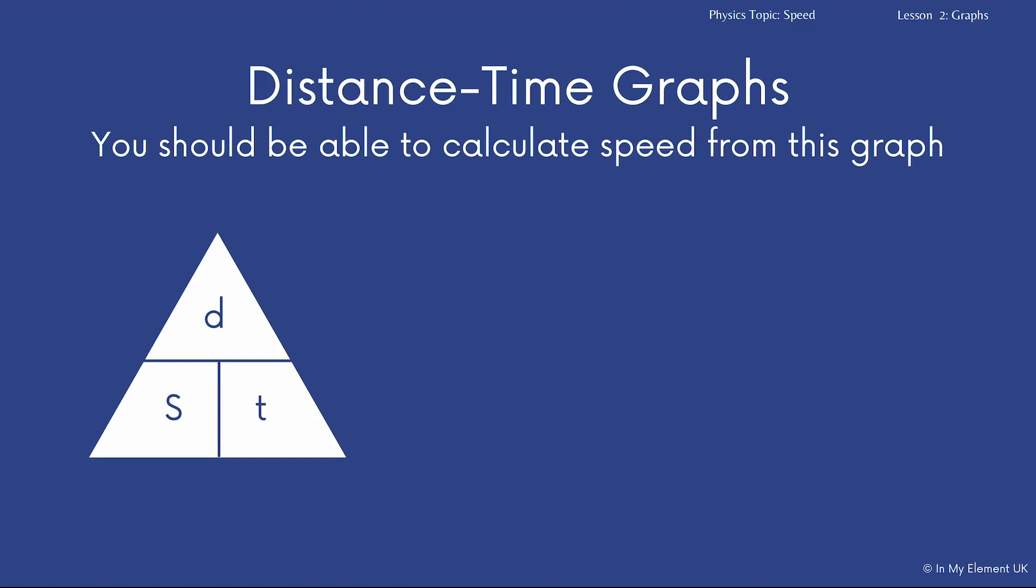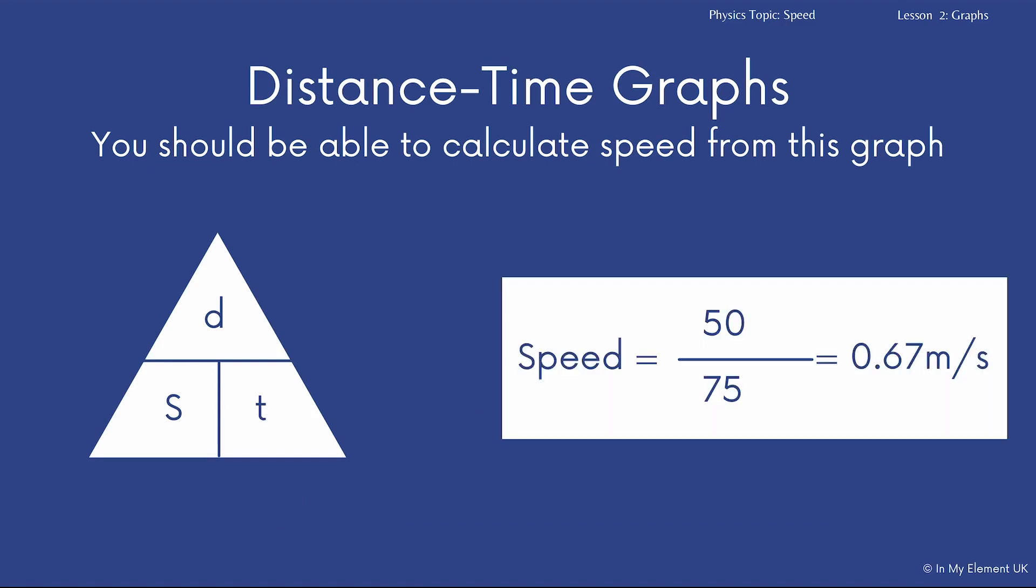Here's your formula triangle. Okay, so you would put those into that equation, it would be 50 divided by 75. So the speed is 0.67 metres per second.